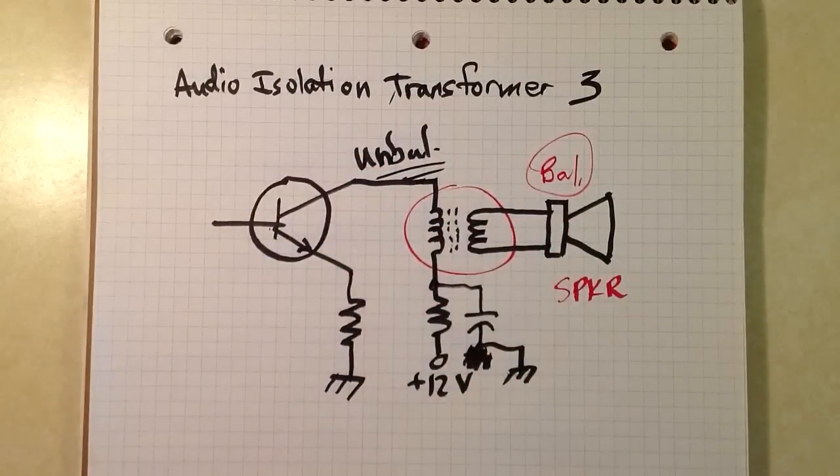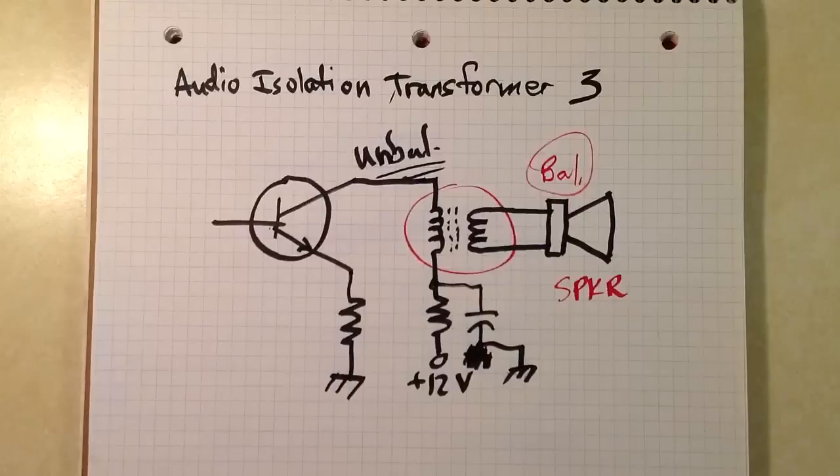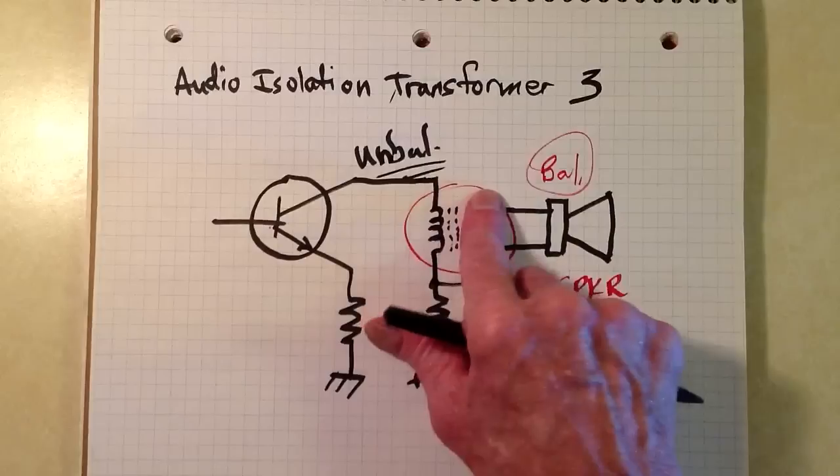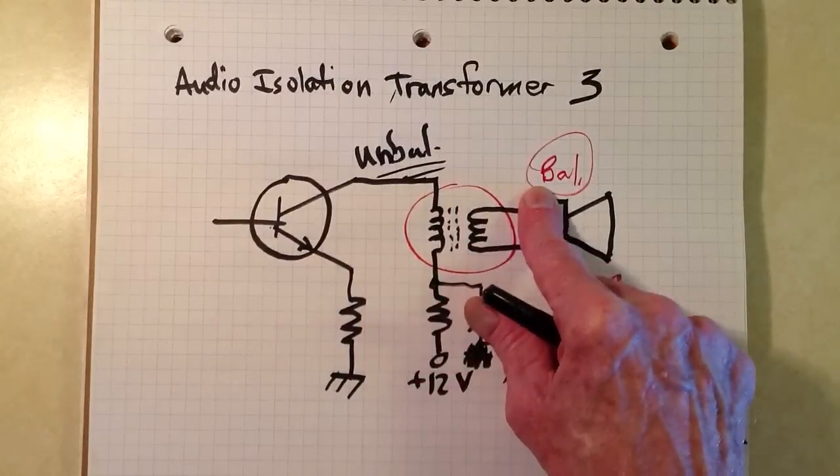There's another thing that an isolation transformer has that's an advantage over capacitive coupling. And by capacitive coupling I mean we take a capacitor and run it to one side of the speaker from here and the other side we ground.